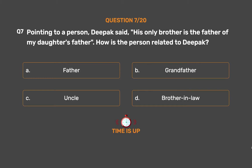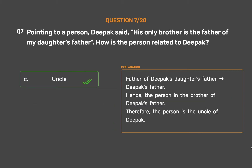The correct answer is Option C: Uncle. The father of Deepak's daughter's father is Deepak's father. Hence, the person is the brother of Deepak's father. Therefore, the person is the uncle of Deepak.